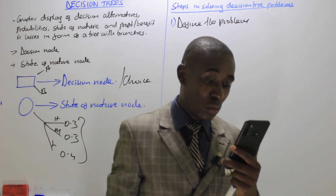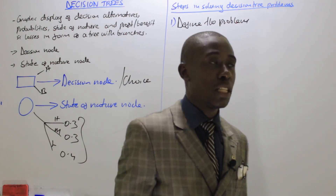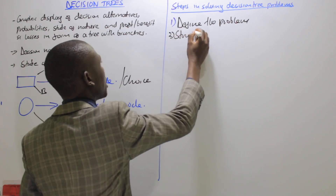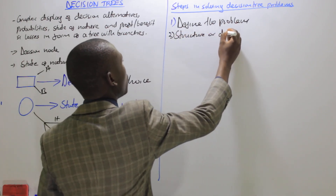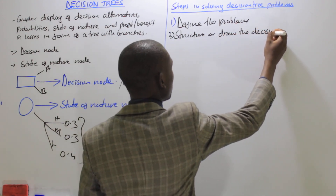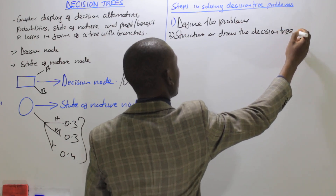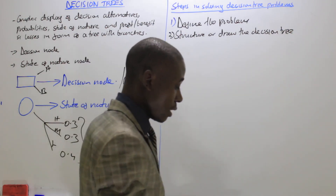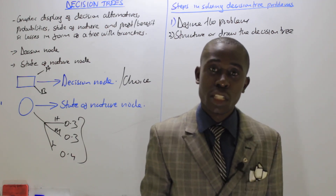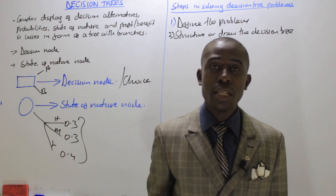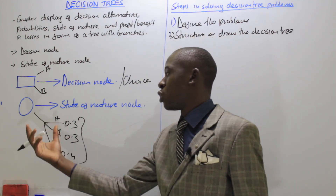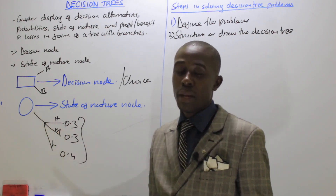Number two, we are talking of structuring or drawing the decision tree — you have to structure or draw the decision tree. Number three, we are saying that you assign probabilities to the state of nature. You have to assign the probabilities to the state of nature node. As we've seen, these components will always be attached with probabilities.